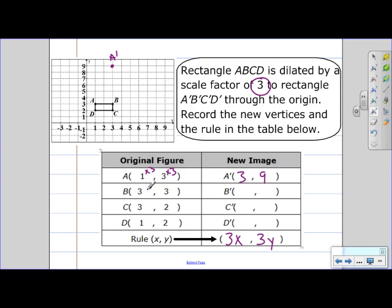Take 3 and multiply that by 3, and we get 9. And multiply this by 3, and we also get 9. So then B prime is at 9, 9.